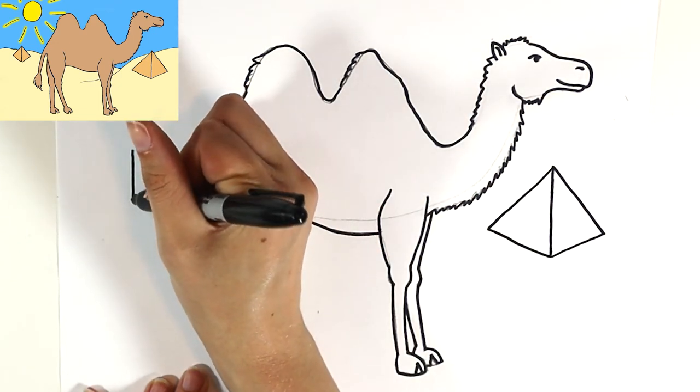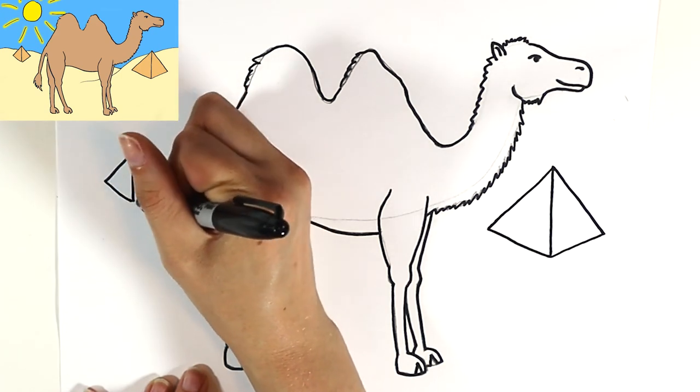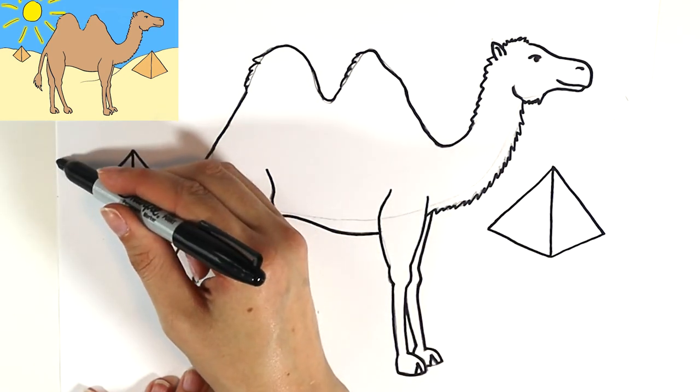And I'll do one more over here. All right, and now that I have those, I'm gonna draw my sand dunes, so I'm just gonna draw kind of like a wiggly line behind.